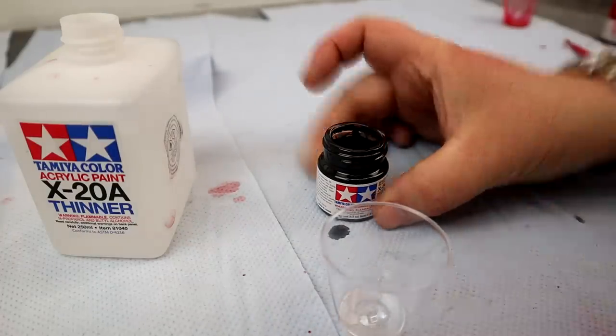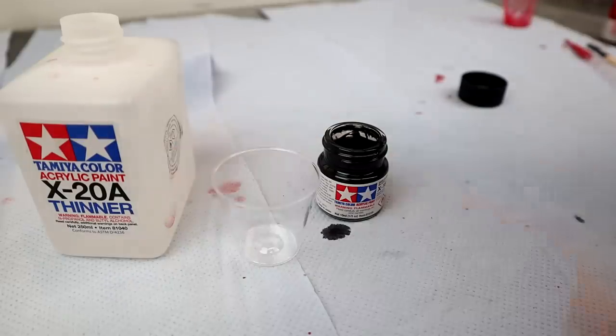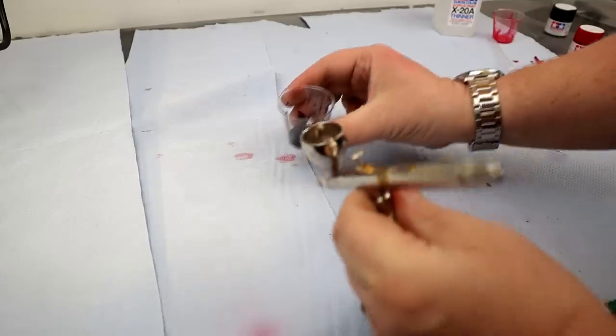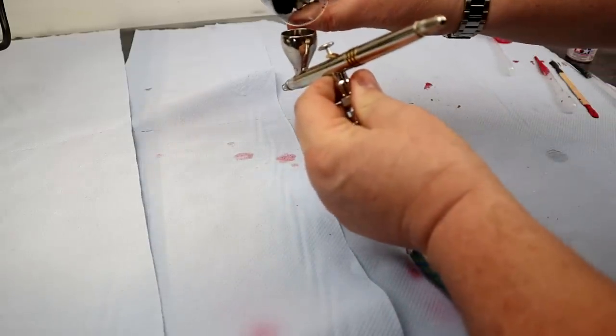Underneath, I've decided to do black. Again, this is the Tamiya X1, I think it is, and I don't need so much of this, although I do mix it with a one-to-one ratio again with the X20A thinner.